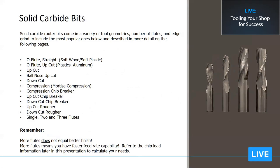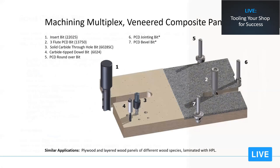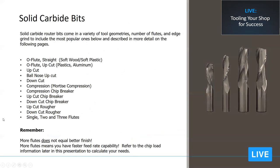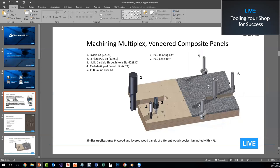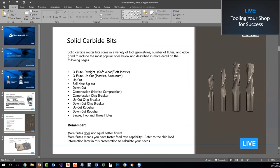Solid carbide bits are the workhorse of the CNC machine — most everybody is using solid carbide router bits of one kind or another. We have compression bits, up cuts, down cuts, O-flutes, and chip breakers for plywood. One important thing when ordering a solid carbide bit is to make sure you're getting the right carbide grade for the material being machined, because that will make a big difference in tool life. The difference is mainly in the binder, and it can mean the difference between 10 panels or 100 panels. Always make sure your supplier knows what's being machined.